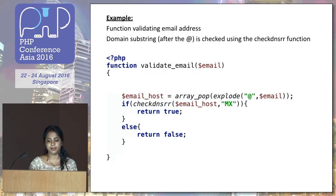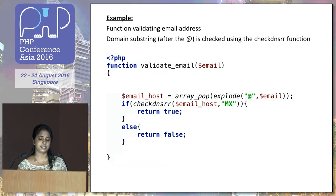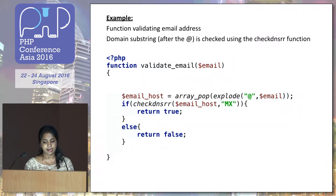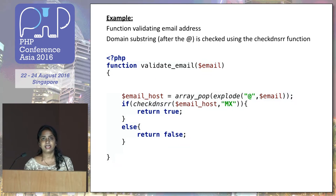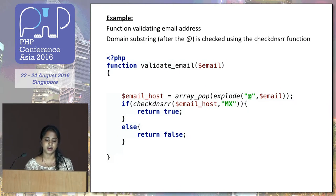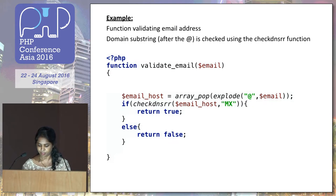Here's a simple example. This function does a partial validation of an email address. What it does is extract the domain name from the email and pass it to the checkdnsrr function. If the domain exists it will return true, otherwise it will return false. This will help you find out if the host name — the domain — exists. You can use it to check the validity of the email.